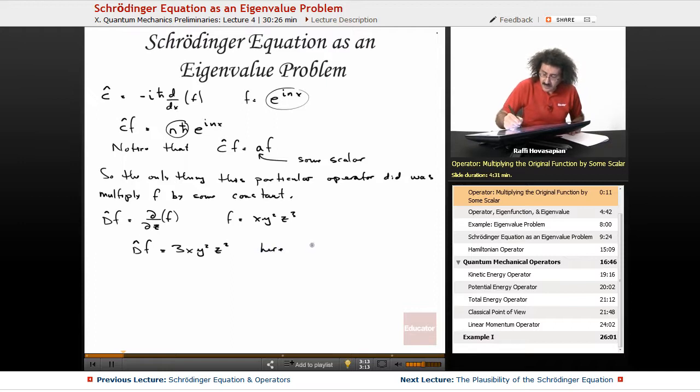So here, operating on f didn't just multiply it by some scalar factor. The d of f was 3xy squared z squared. The original function was xy squared z cubed. So in this case, it didn't do that.